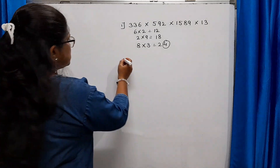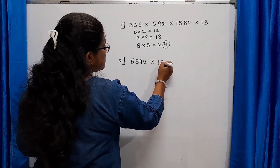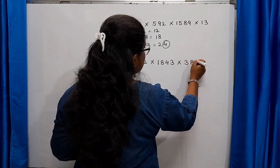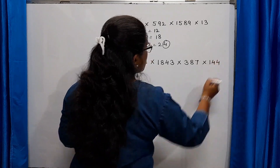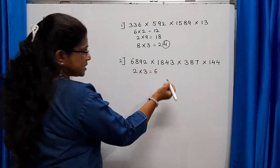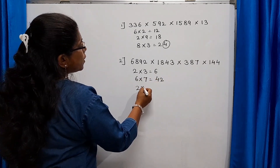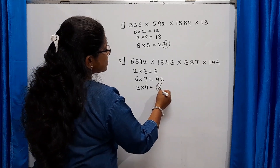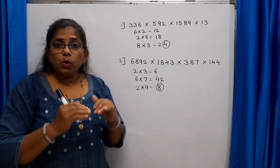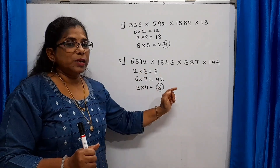Let's check one more example: 6892 × 1043 × 387 × 144. Multiply the units digits: 2 × 3 = 6; 6 × 7 = 42, take 2; 2 × 4 = 8. So 8 is the digit in the units place of the final product of these numbers. No need to do the actual multiplication — this is how we find the units digit in a few seconds.